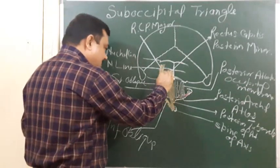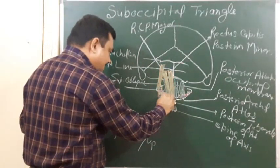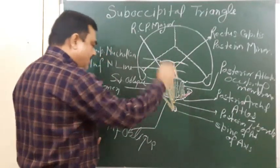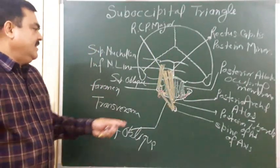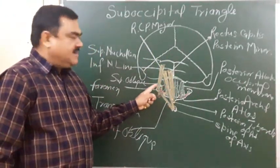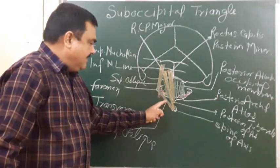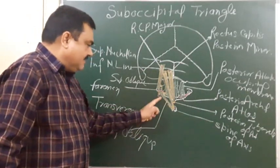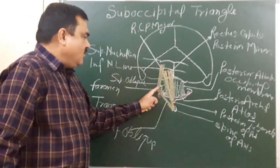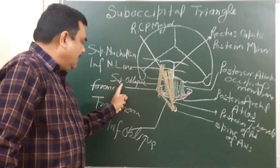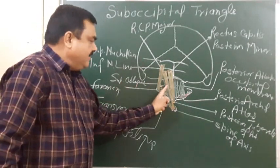Now you can see this is the triangle — this is the suboccipital triangle. Now let's discuss the boundary of the suboccipital triangle.